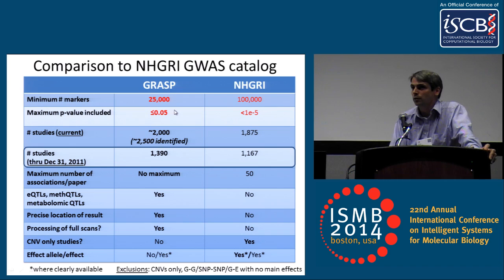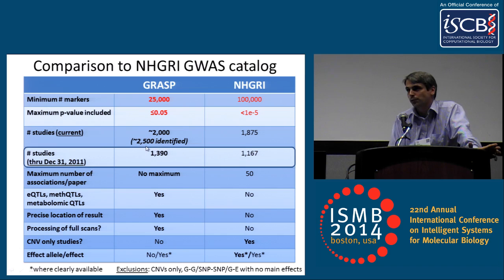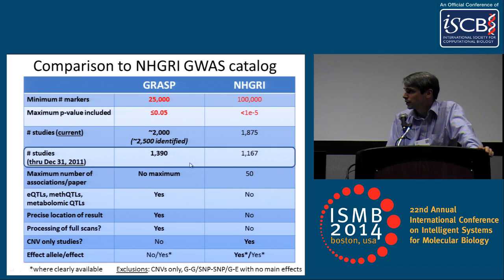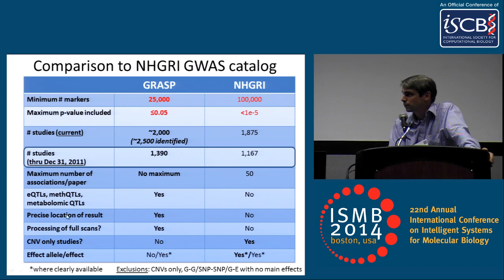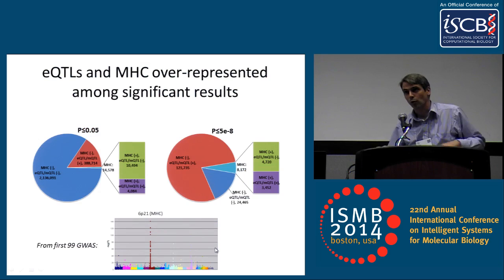We think there's still useful information in the range from 25,000 to 100,000 markers. We currently have data for about 2,000 studies, and based on searches there's probably more than 2,500. The NHGRI catalog is also lagging behind because of the time it takes to curate, and at the given point I'm talking about there's a difference of about 250 GWAS. About half of those are missed in the other catalog, which we think has to do with string search terms. Other important differences: we collect eQTLs, methylation QTLs, and metabolomics QTLs — high-dimensional genetic studies not included in the other catalog. We process full scans and record the specific location of the result.